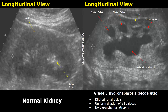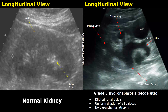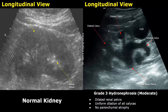This is another image of grade 3 hydronephrosis with a cyst. This is the cyst, and these are the dilated calyces in all upper, middle, and lower poles of the kidney. The cortical thickness appears normal.